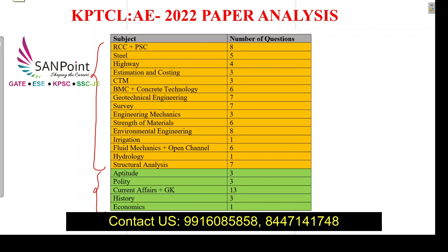The high-weighted subjects were RCC and PSC with 8 questions, BMC and concrete technology with 6 questions, geotechnical and survey with 7 questions each, strength of material with 6 questions, fluid mechanics and open channel with 6 questions, structural analysis with 7 questions, and environmental engineering with 8 questions. In the GS part, the maximum weightage was given to current affairs and GK, with a total of 13 questions.